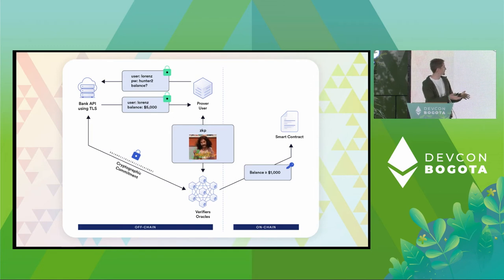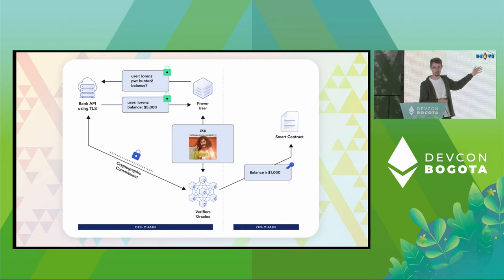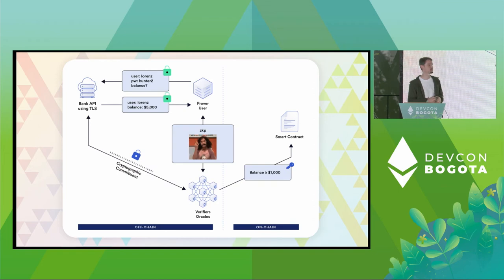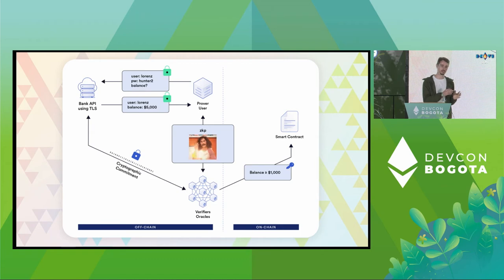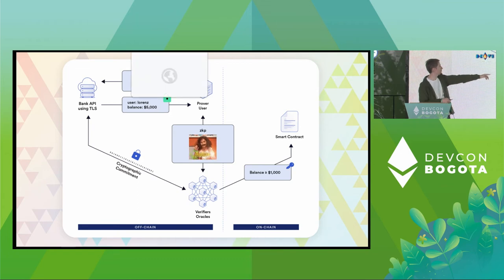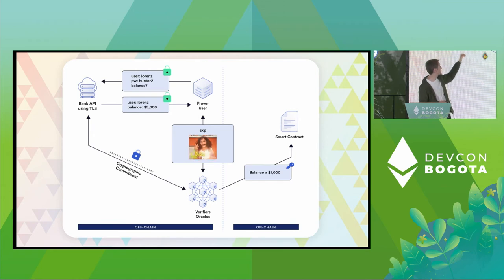Now we get to the final step, which I'm abbreviating as ZKP Magic because I have about two minutes left. We run an interactive zero-knowledge proof protocol between the prover — myself — and these oracles. As part of that ZKP protocol, I can convince the oracles cryptographically that, for example, this statement holds — that my balance is greater than a thousand dollars — but that is the only thing they will learn. They will not learn my credentials and they will not learn my precise balance.